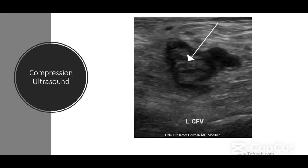Absolute contraindications to anticoagulation include having a recent surgery, as we should not give anticoagulation to patients who have recently had an operation; patients who have had a hemorrhagic stroke, as this can increase the risk of further bleeding; and patients who have other active bleeds, such as GI bleeds. Therefore, the IVC filter can be extremely helpful in patients who have high-risk proximal DVTs, who already have a PE, and who have one of these absolute contraindications to anticoagulation.